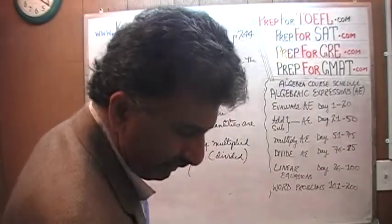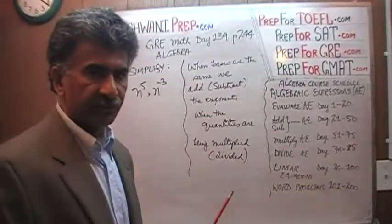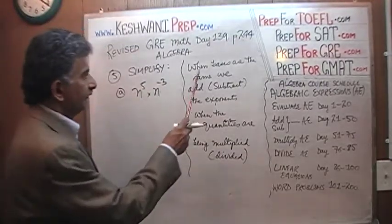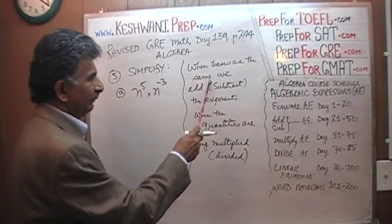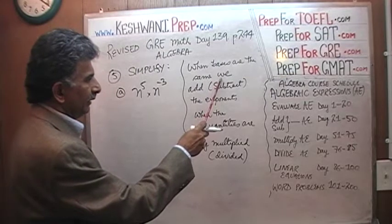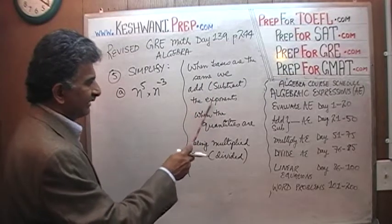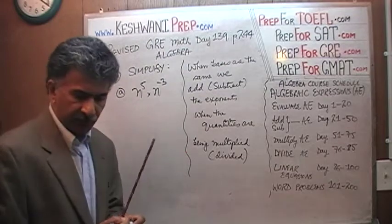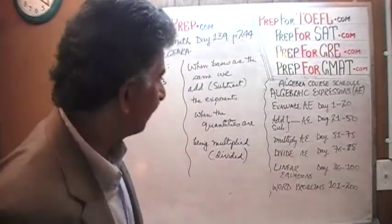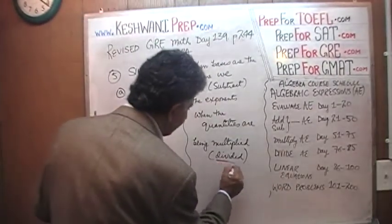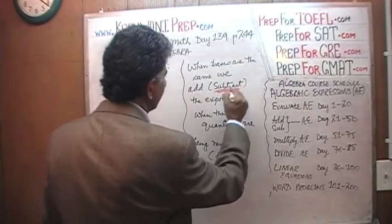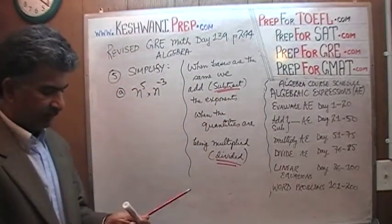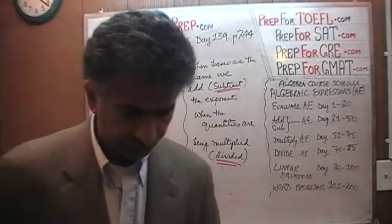The most fundamental rule of exponents that you have to understand — something I already put on the blackboard — is: when the bases are the same, we add the exponents when the quantities are being multiplied. And if the quantities are being divided, we subtract the exponents.